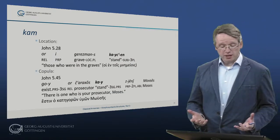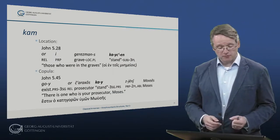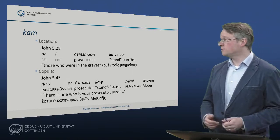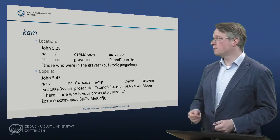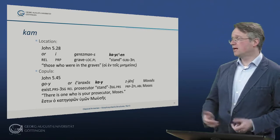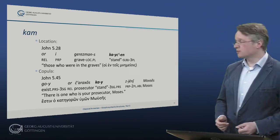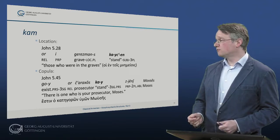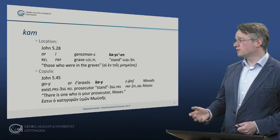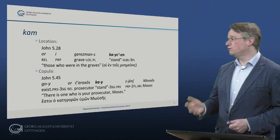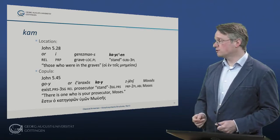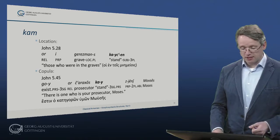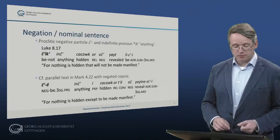Kam is also used for location — 'vor i gerismans kaitsen' — those who were in the graves ('hoi entois menemeiois' in Greek) — and simply as a copula verb: 'go vor çarachos ka' — as James Moff says, there's one who is your prosecutor, Moses. So we have all the functions seen in the other verbs also in 'kam.'